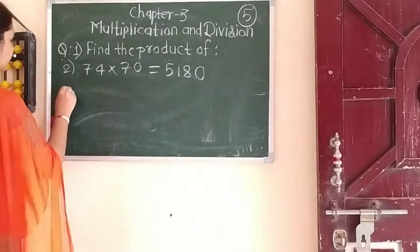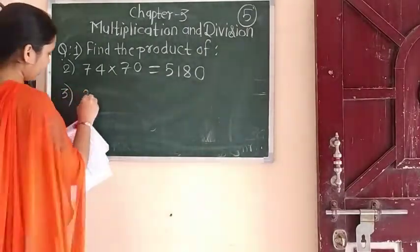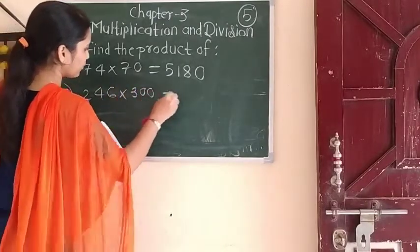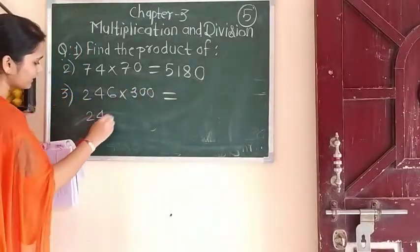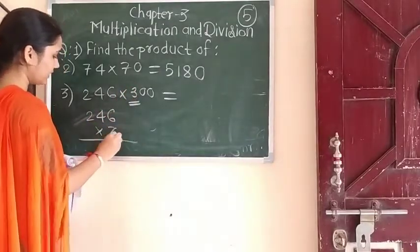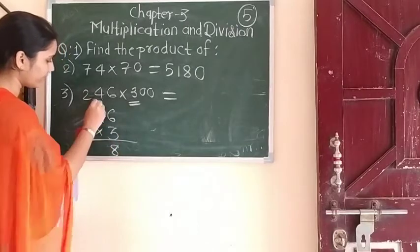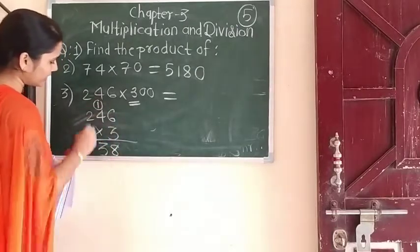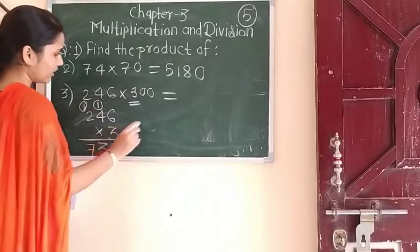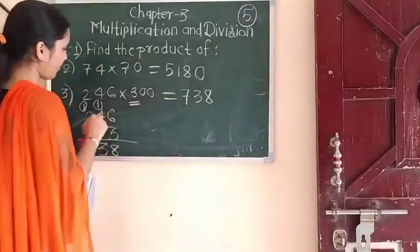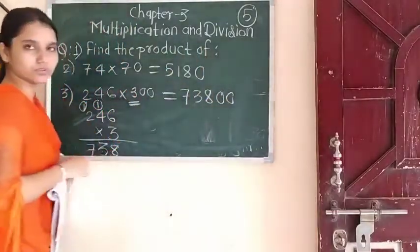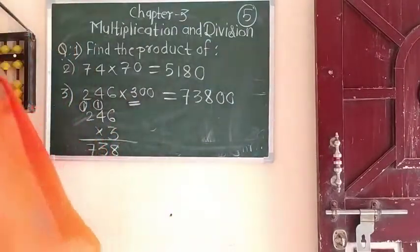Next: 246 multiplied by 300. How will you solve this? Multiply 246 by 3 only. 3 sixes are 18, 1 carry. 3 fours are 12 plus 1 is 13, 1 carry. 3 twos are 6 plus 1 is 7. So we write 738. How many zeros? 2 zeros — so add 2 zeros. The answer is 73800.